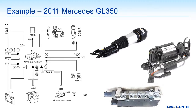In this GL350 Mercedes 2011 model, the major components we see: on the right, photographs of the compressor; in the center and bottom, the valve block for controlling solenoids that control the flow of pressurized air; and in the top left picture, the air suspension damper — the spring damper assembly.